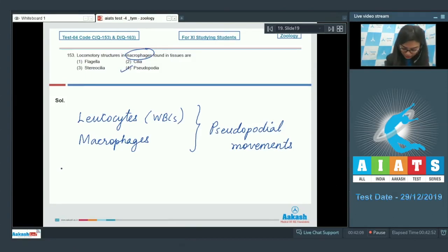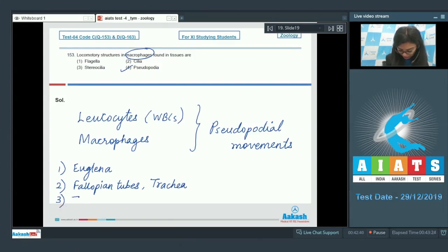Let's look at the other options here. Flagella - flagellar movement is evident in euglena and also evident in swimming of spermatozoa. Option number two, cilia - ciliary movements are evident in fallopian tube for the passage of ova and also in our trachea to remove dust particles that gets inhaled along with the atmospheric air. Stereocilia are present in inner ear and they detect fluid movement. So the right answer here is option number four, pseudopodia.